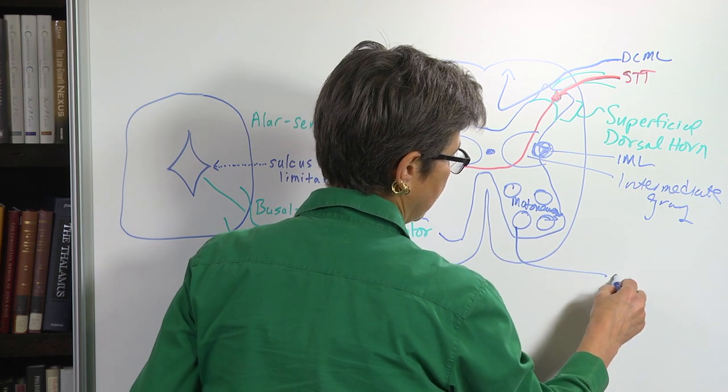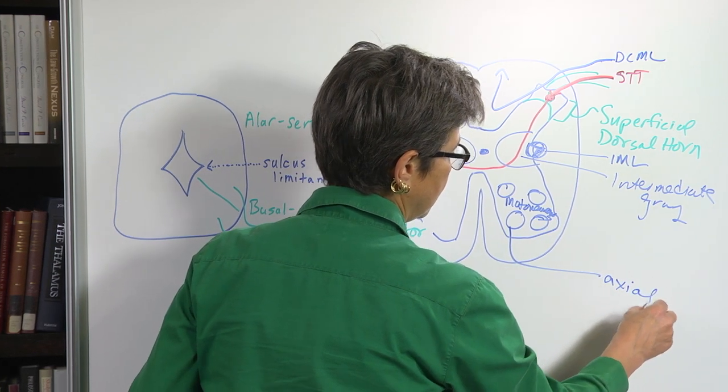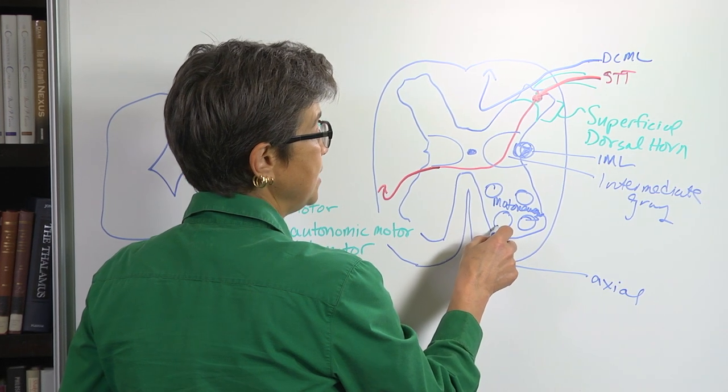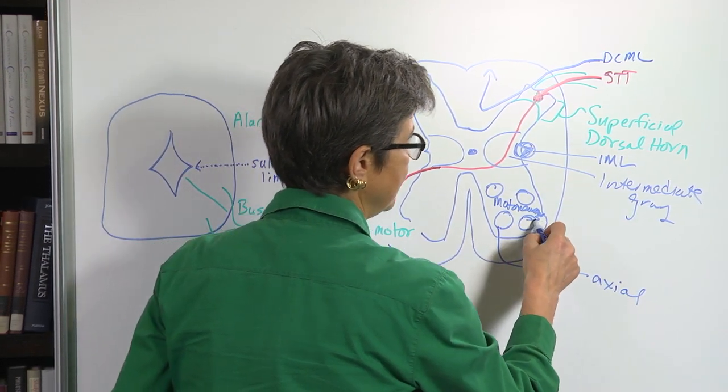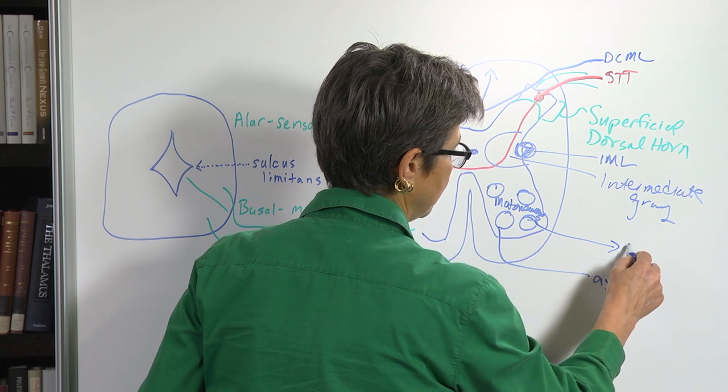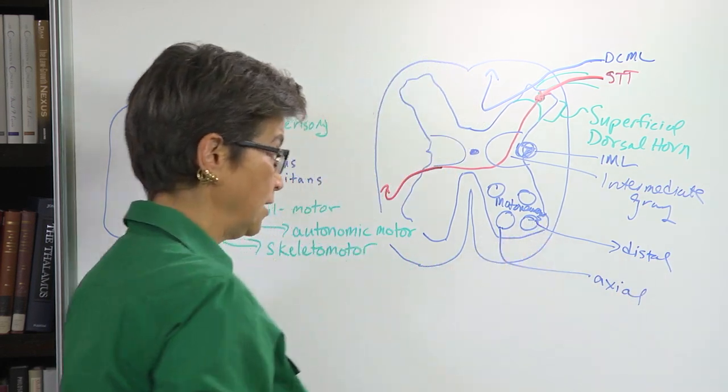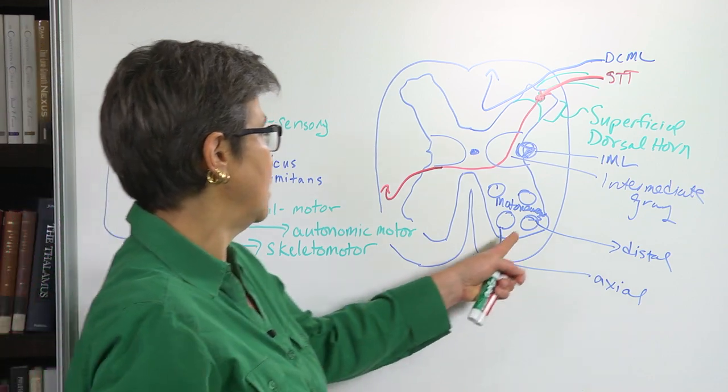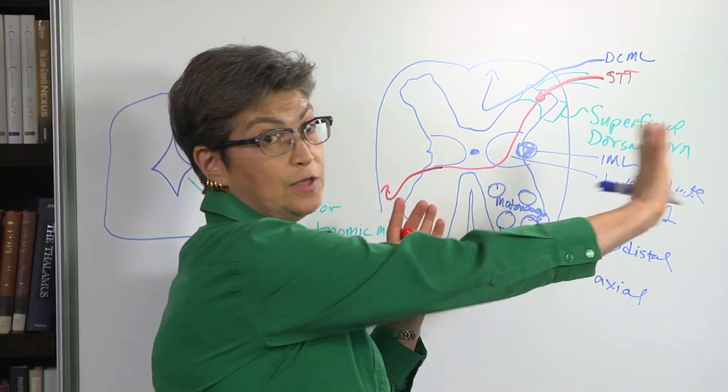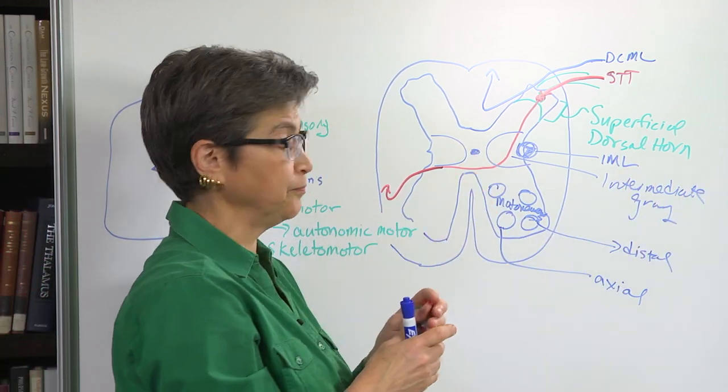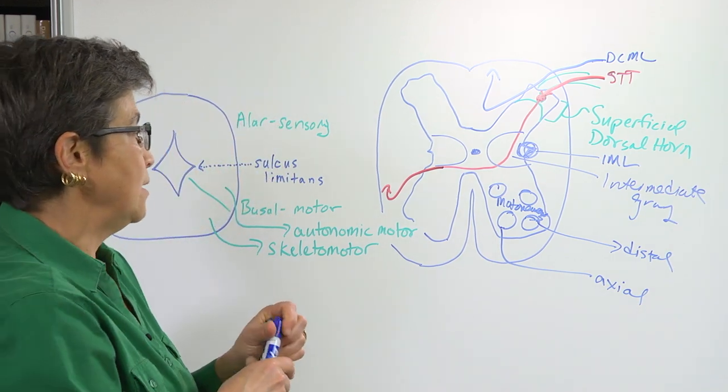And the axial musculature is going to be innervated by the most medially located motor neurons, and the progressively more distal musculature will be innervated by motor neurons that are progressively located more laterally.